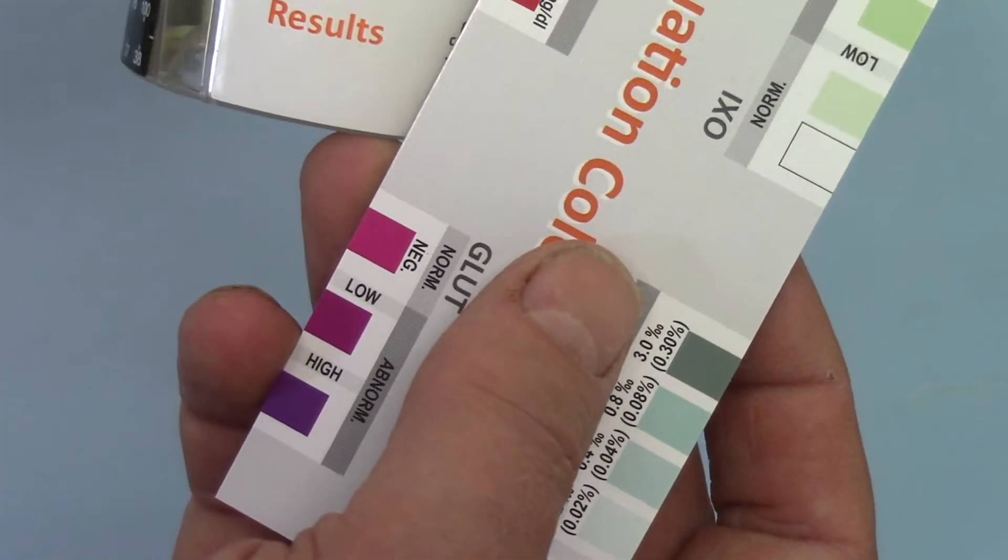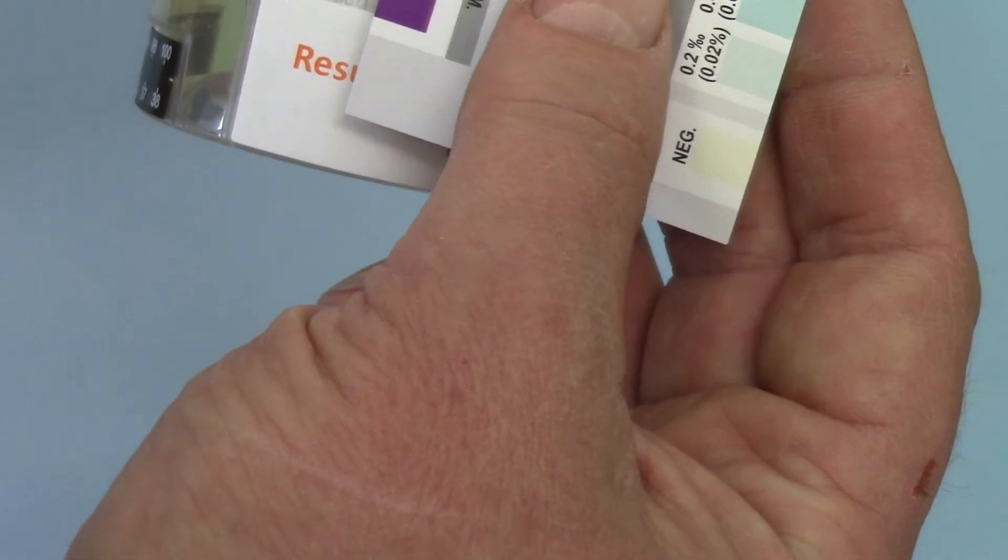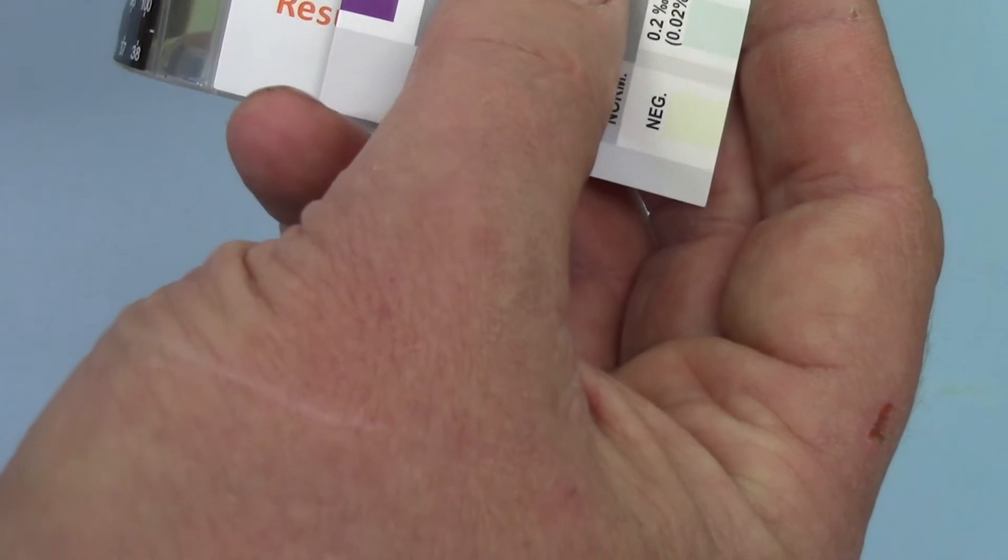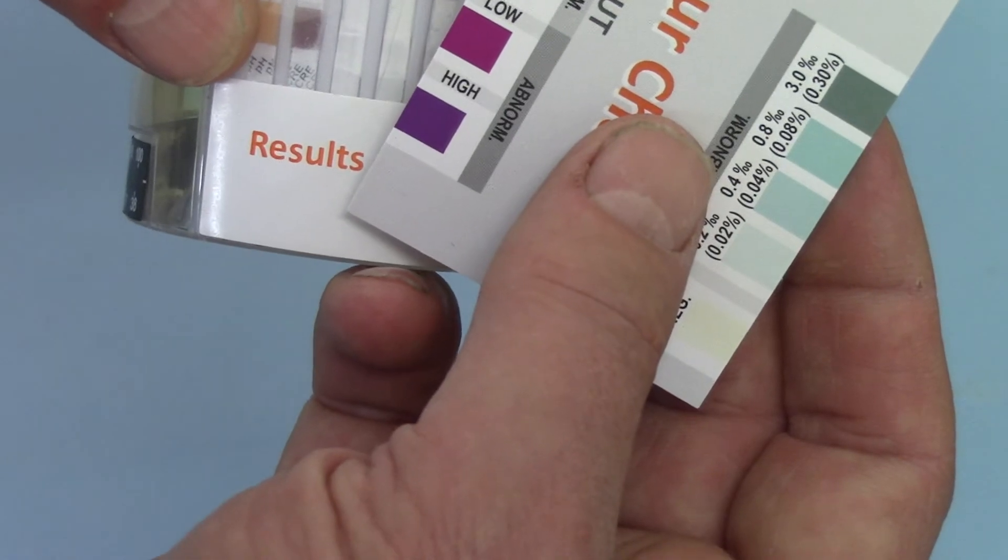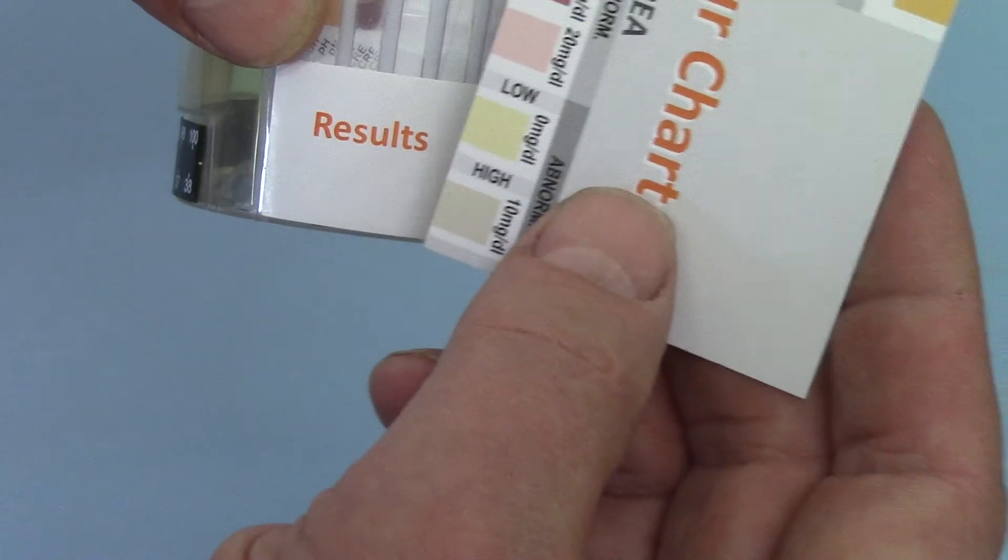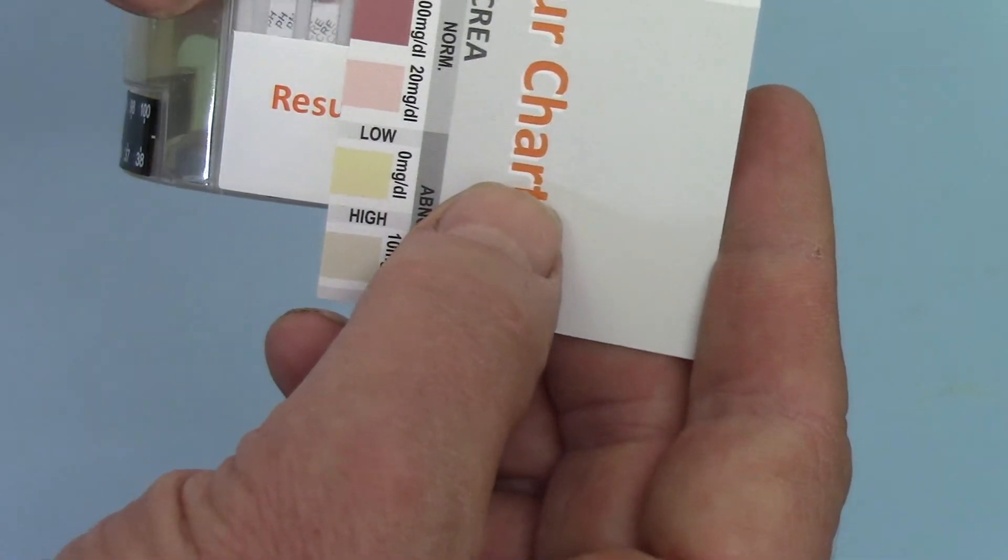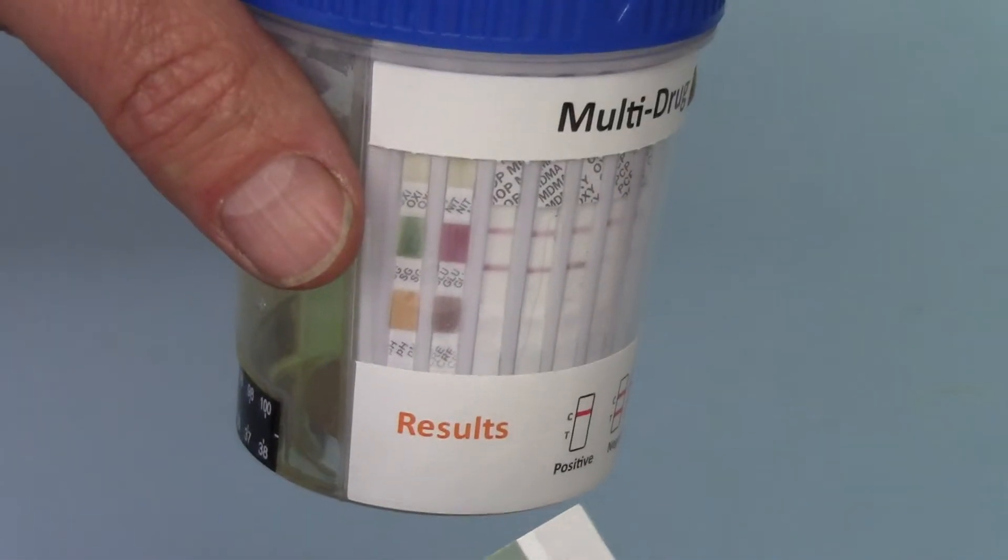Then you look at the GLU, glutealdehyde, and again that's negative. The bottom one on this test pad is the creatinine. If you compare that onto the creatinine level, that's normal. You do the same on the other three pads, making sure that they are all negative or within the normal range.